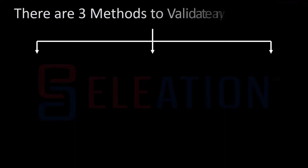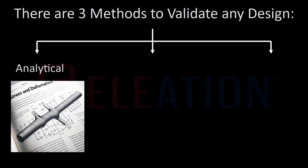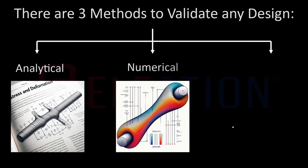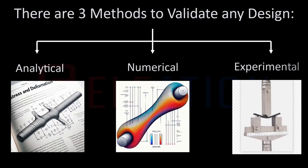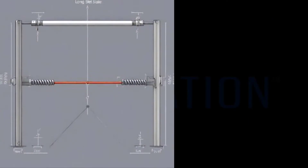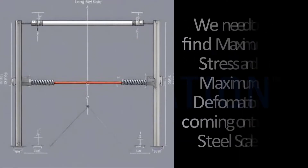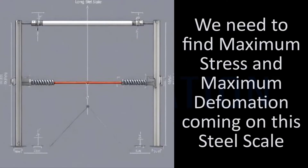There are three ways to validate the design of any parts or components: analytical, numerical, and experimental. Let's explore each of these methods with an example. Consider a long steel scale, fixed at both ends, with force applied at its center. Let's suppose we need to determine the maximum stress and maximum deformation on the steel scale.